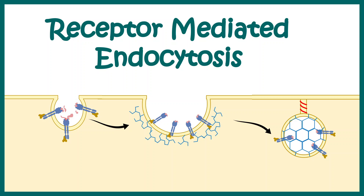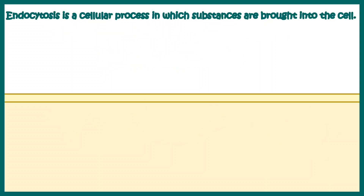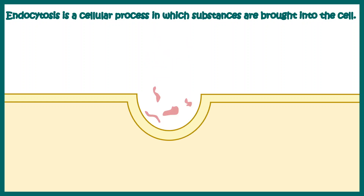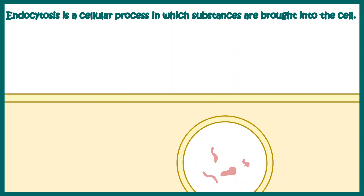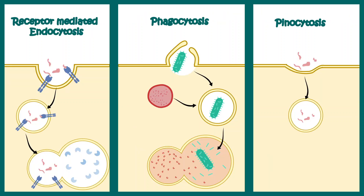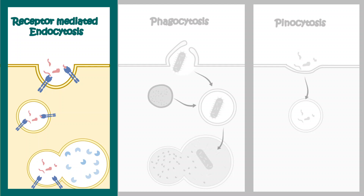In this video we'll talk about the process of receptor-mediated endocytosis. Endocytosis is a cellular process in which substances are brought into the cell, and there are three categories of endocytosis: receptor-mediated endocytosis, phagocytosis, and pinocytosis. This particular video will focus on the mechanism of receptor-mediated endocytosis.